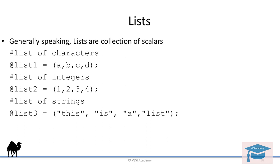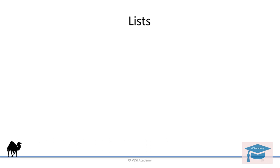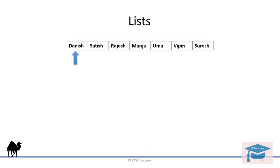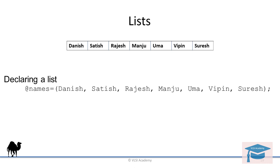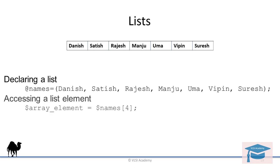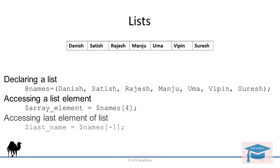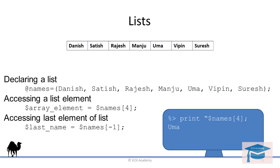As we know, a list is a collection of scalars, and hence it is ordered and can be referenced with index values. This is how we declare the list. To access its elements, we just have to specify the index value in the list name. And since it is a scalar value, we specify the prefix with the dollar sign. We can also access list elements from the last — the last element index will be minus one. So when you run it in the command line, the fourth element of the output will be OMA. And when you run the second line in the command line, the output should be Suresh.